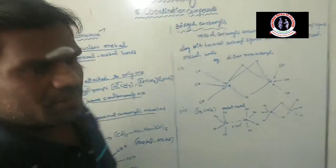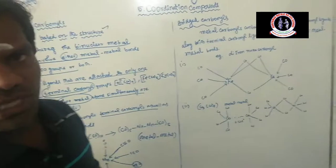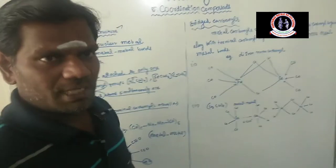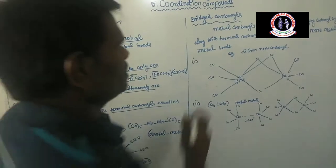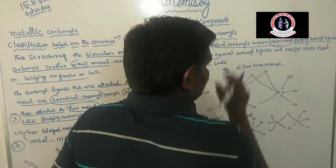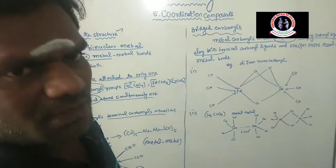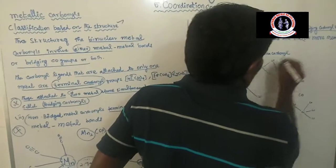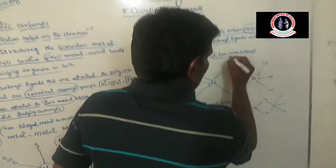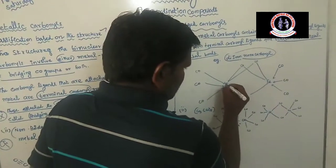Next are bridged carbonyls. Metallic carbonyls are classified based on their structure. When two or more metal atoms combine with carbonyl groups and form a bridging arrangement, they are called bridged carbonyls. The metal carbonyls contain one or more bridging carbonyl ligands along with terminal carbonyl ligands and one or more metal-metal bonds. For example, di-iron nonacarbonyl — iron is the central metal atom.